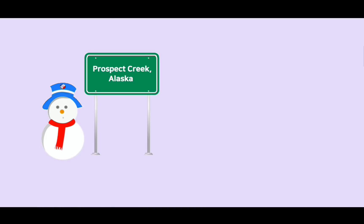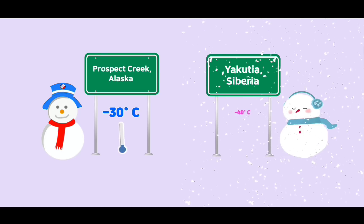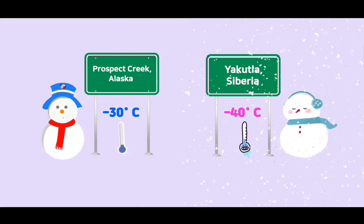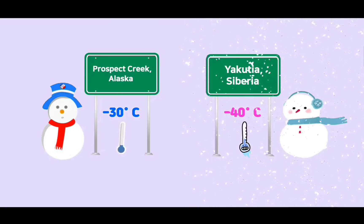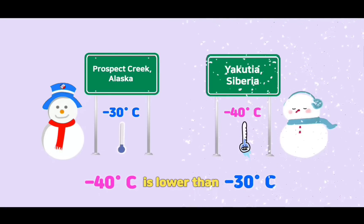Suppose on a winter's day, it's negative 30 degrees Celsius in Prospect Creek, Alaska, and negative 40 degrees Celsius in Yakutia, Siberia. Yakutia would be colder than Prospect Creek because negative 40 is lower than negative 30.